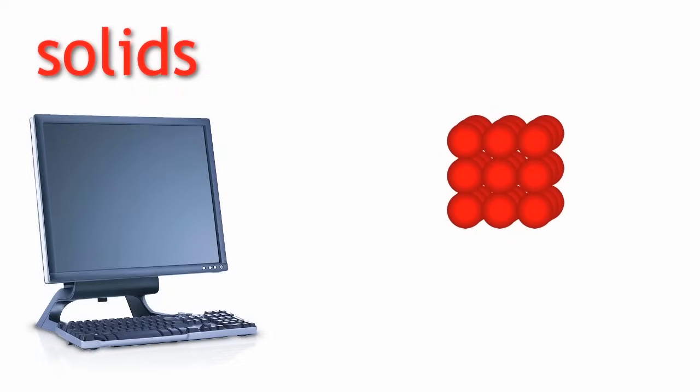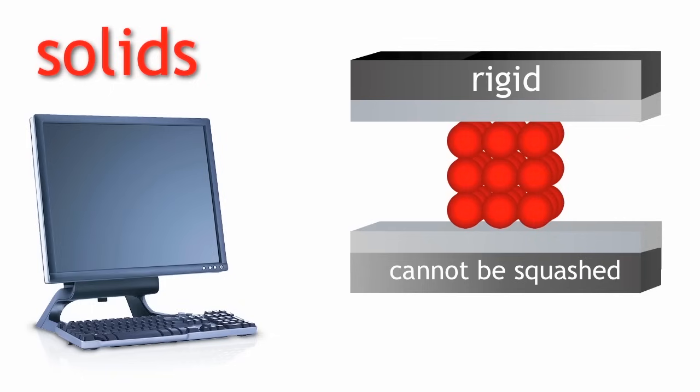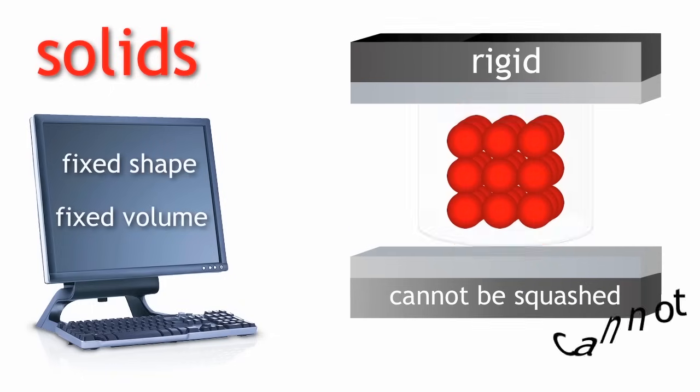So, solids are rigid, cannot be squashed or compressed, have a fixed shape and a fixed volume. They cannot flow.